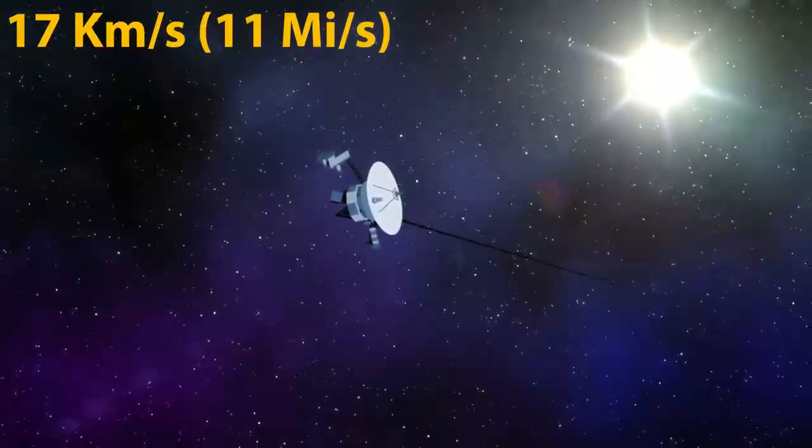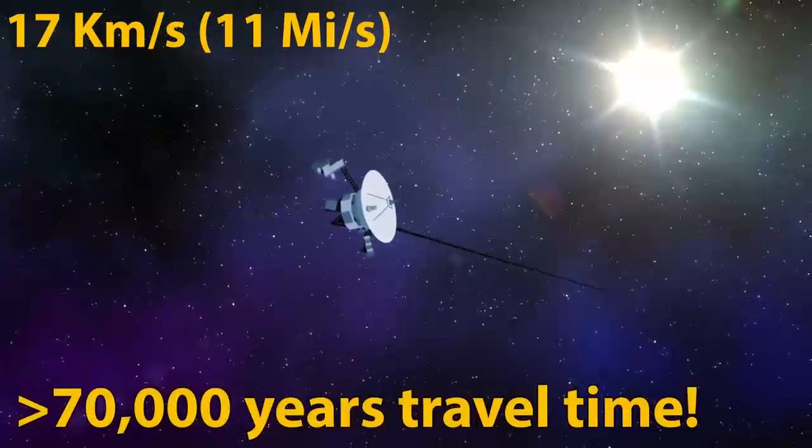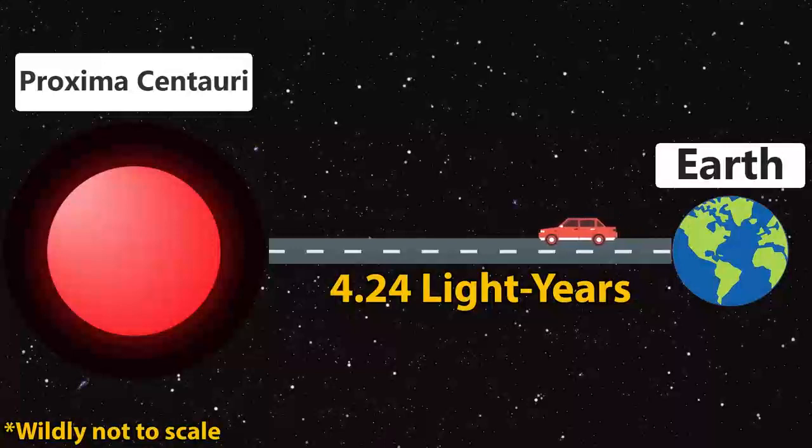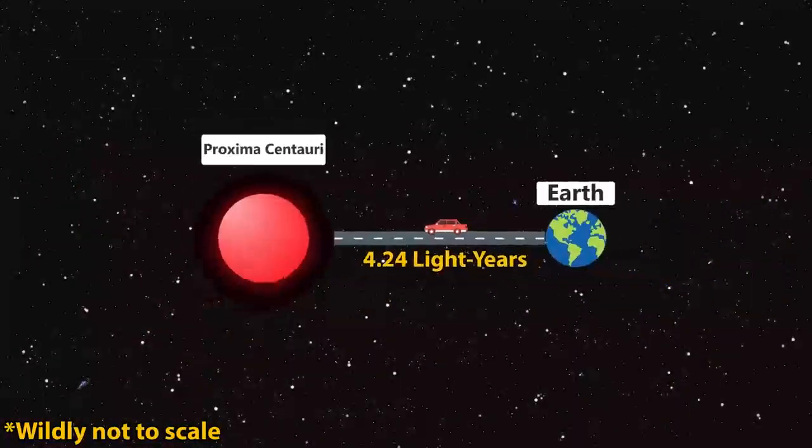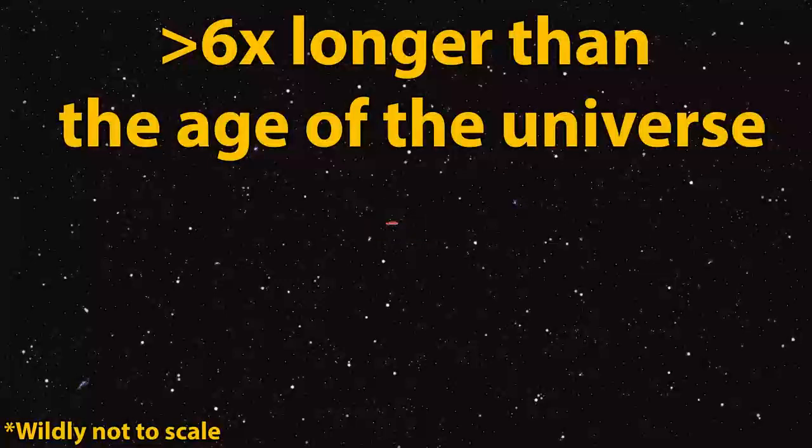if it was heading in the right direction, it would still take Voyager 1 over 70,000 years to reach it. In other words, if you drove your car at 100 kilometers an hour like in our previous example to the moon, it would take over 6 times longer than the entire age of the universe is just to finally get there, and it wouldn't even exist still when you arrived.